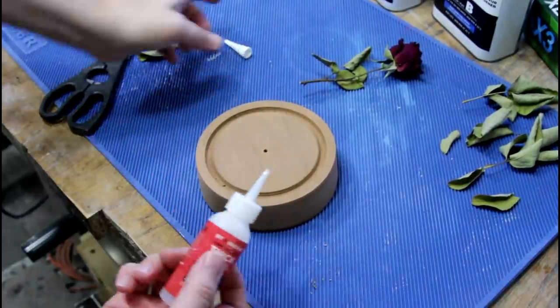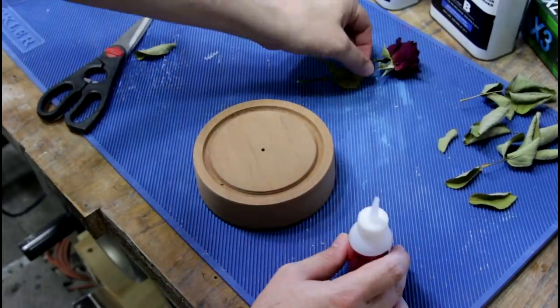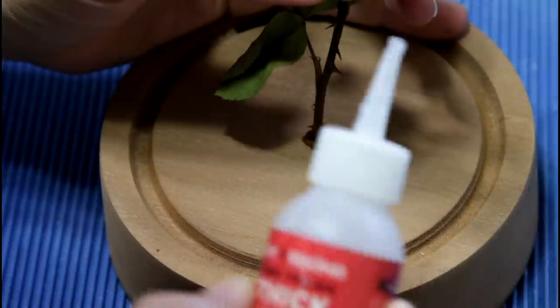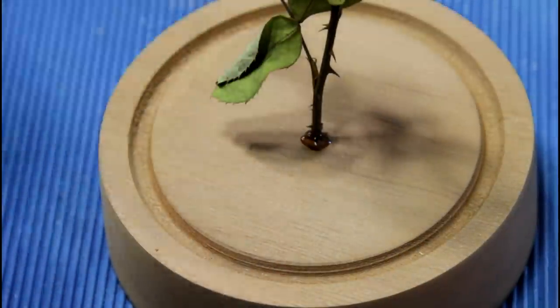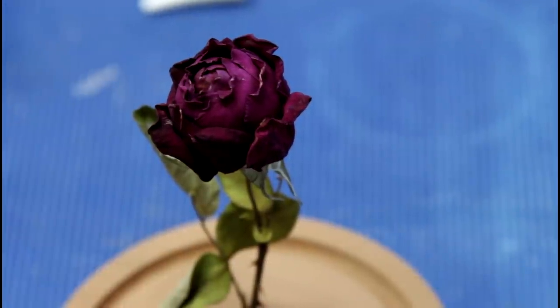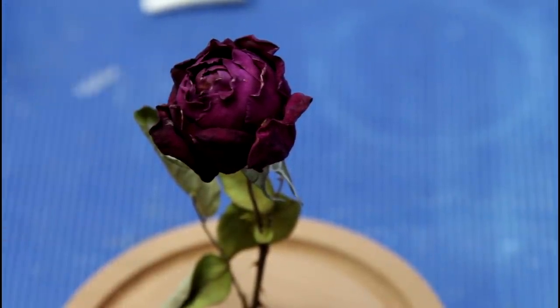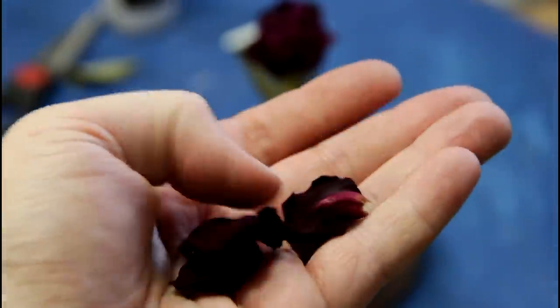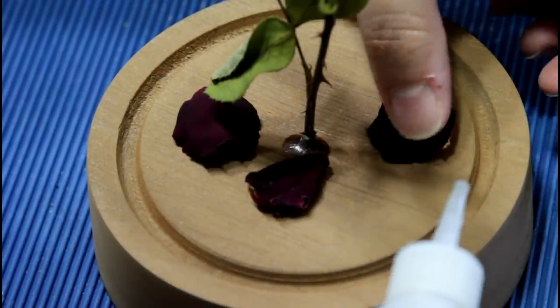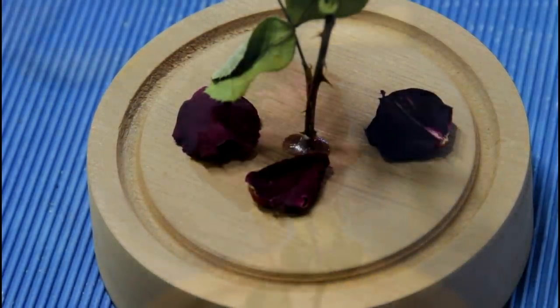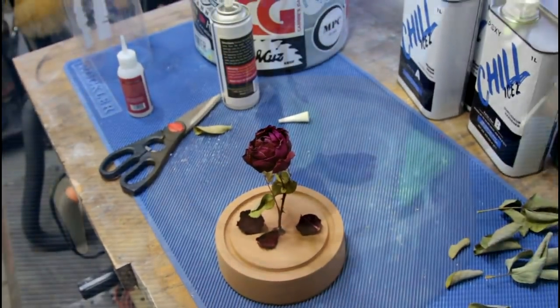We should just be able to use a little glue and get our rose in there. Yeah, it looks really cool, and it's got a really dark color to it. And here are a couple of dried petals that I found in the flower bed. Yeah, I think that looks pretty cool.